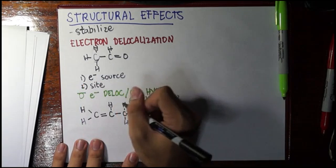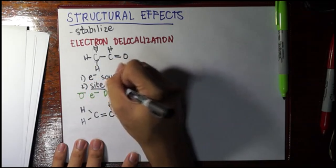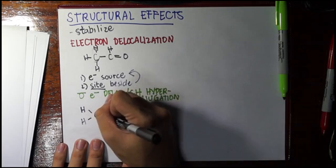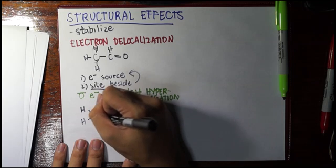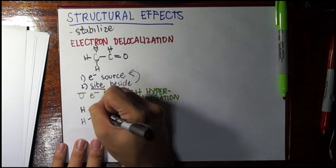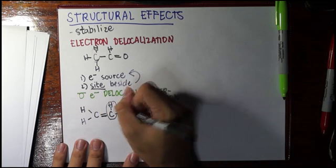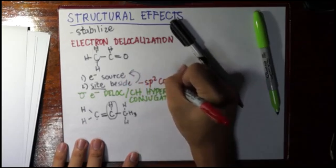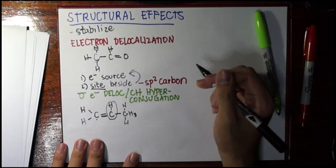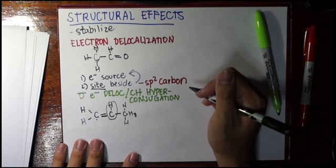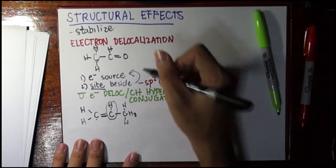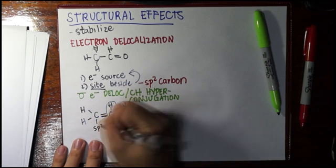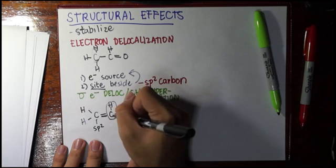First of all, we need to find the electron source. By the way, the site should be beside the electron source, so meaning if this is the site, then the electron source should be this one. Why did I say that this is the site? The site should always be an sp2 carbon.